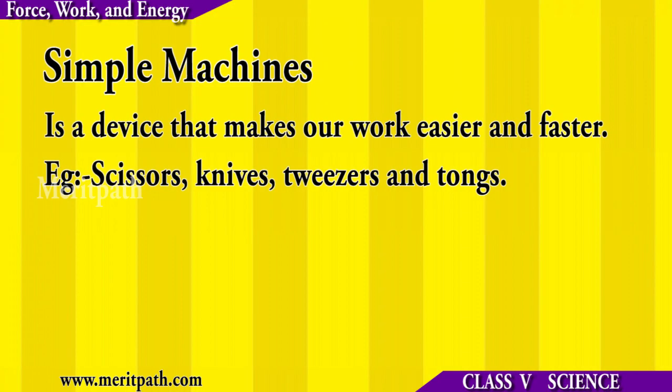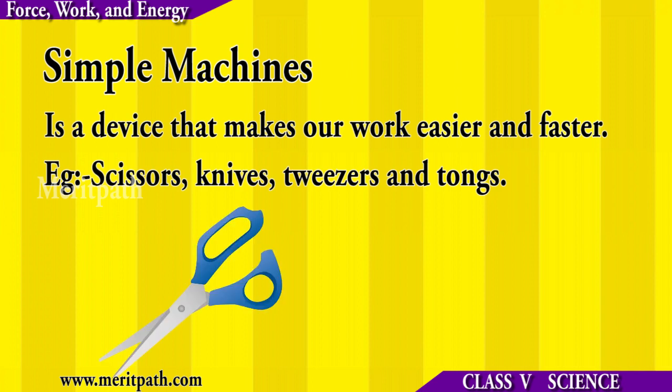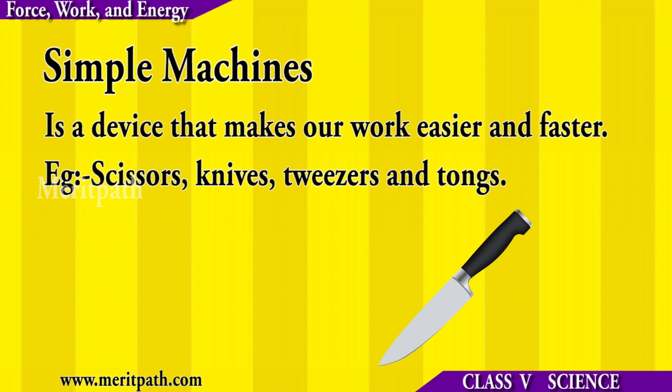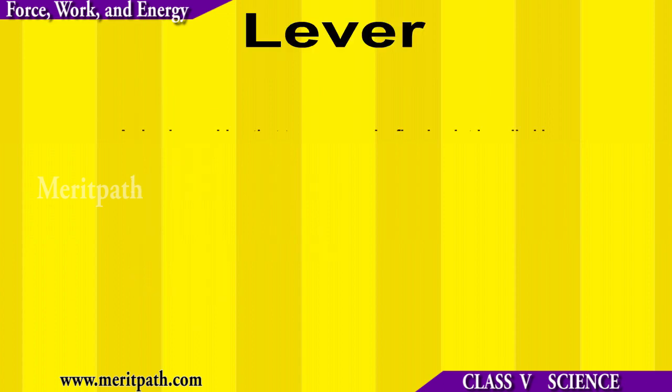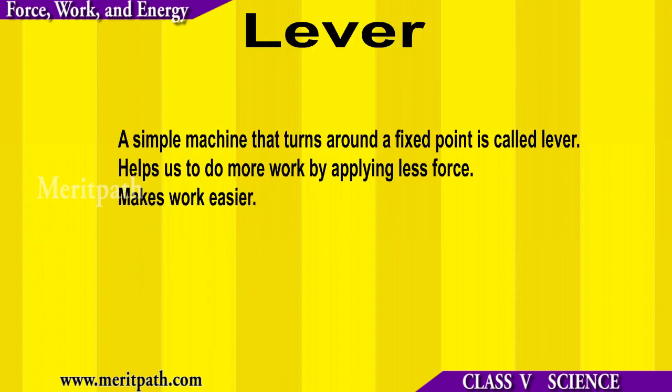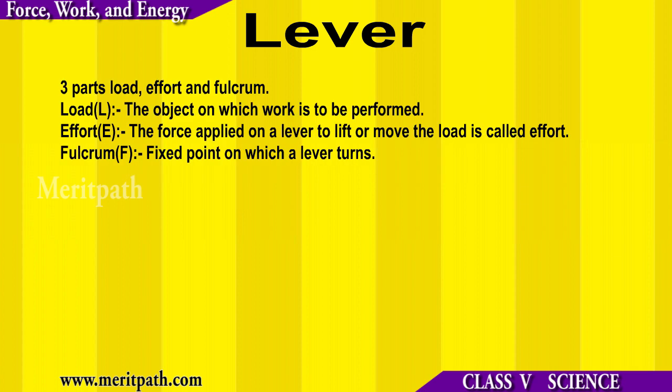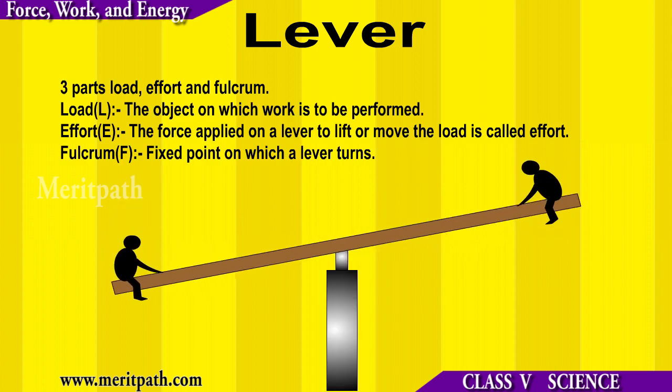Simple machines are devices we use in our daily life to make our work easier — for example, scissors, a knife, etc. Simple machines are grouped as lever, pulley, inclined plane, screw, wheel and axle, and wedge. A lever is a simple machine which helps us to lift loads with lesser effort.